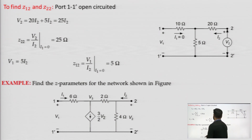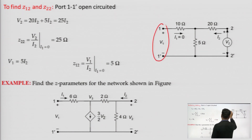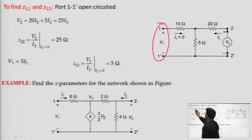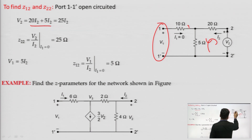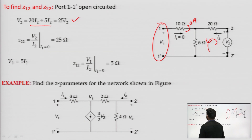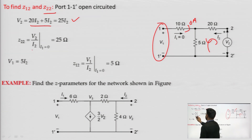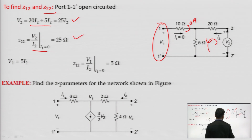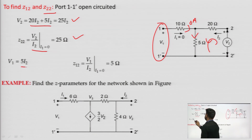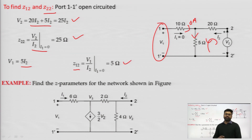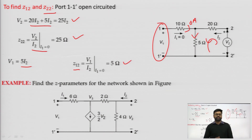Now open circuiting port 1 (I1 = 0), we get V2 = 20·I2 + 5·I2 = 25·I2, so Z22 = V2/I2 = 25 Ω. V1 equals the voltage across the 5 Ω resistor, which is 5·I2, so Z12 = 5 Ω. This confirms the network is reciprocal since Z12 = Z21 = 5 Ω.